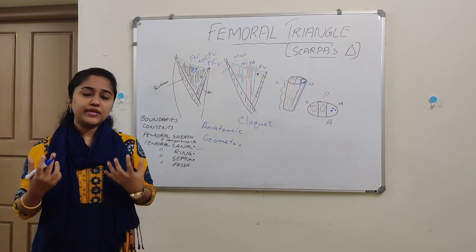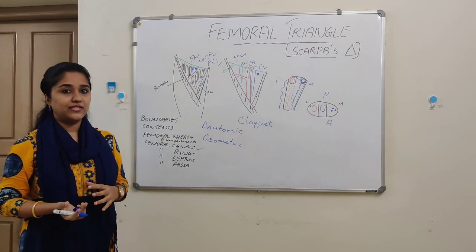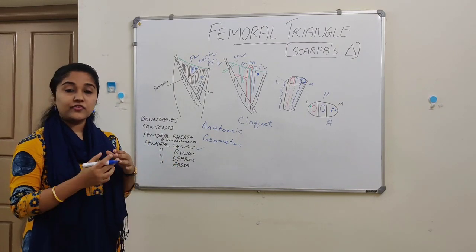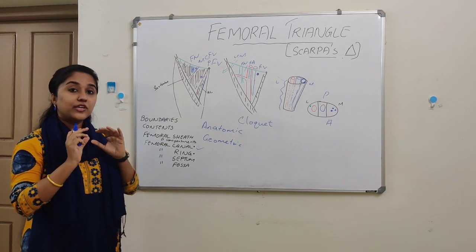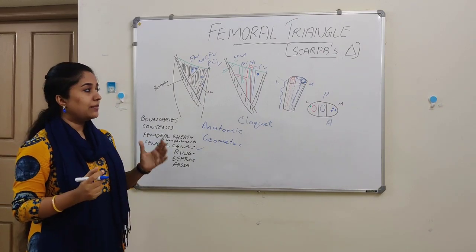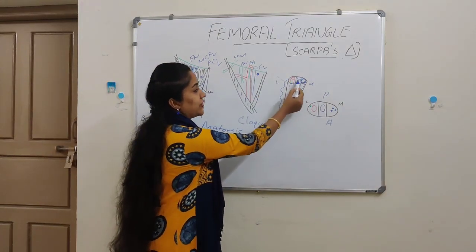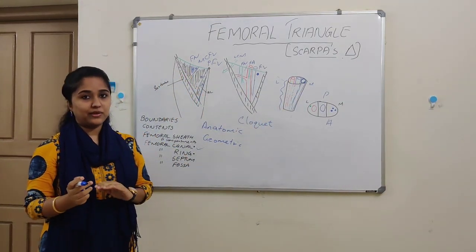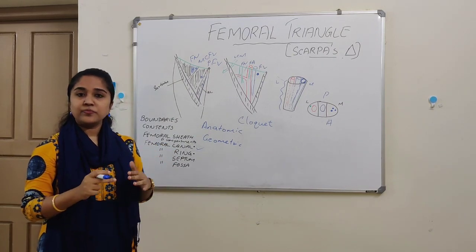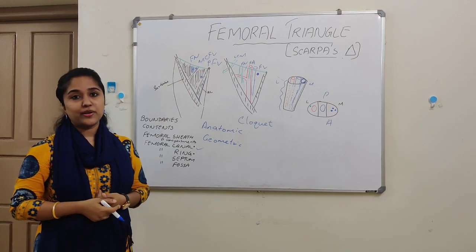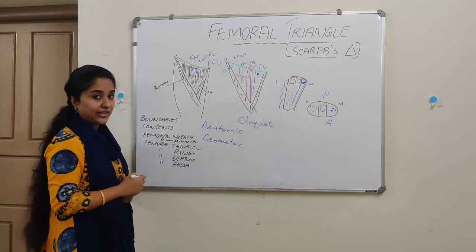Femoral hernia is more common in females because they have a wider femoral ring. This is because the female pelvis has greater breadth, and also the diameter of the femoral vessels is narrower in females. Because of that, the femoral ring is wider, and therefore there is a greater chance of femoral hernia in females.